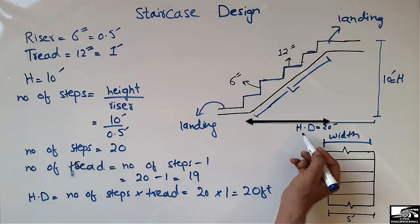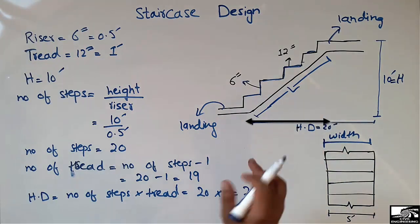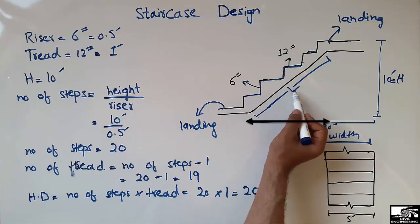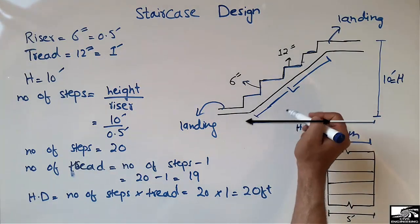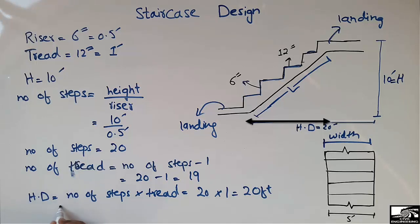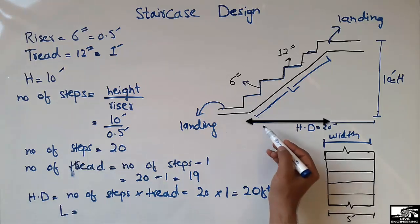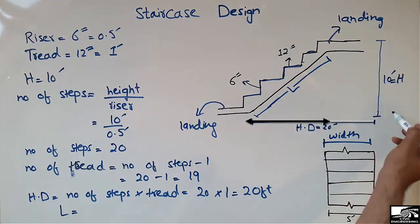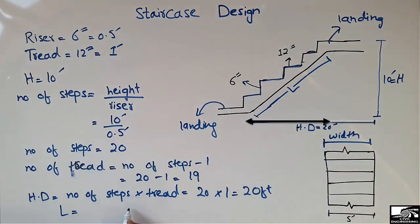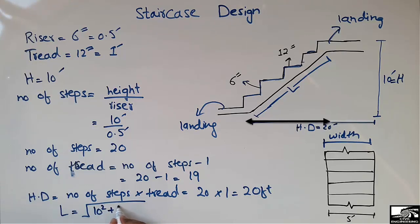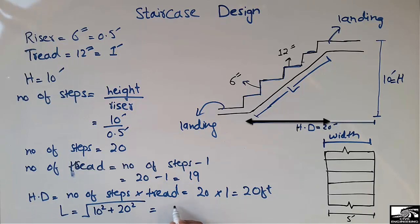Now the remaining unknown is the total length of the staircase. Since the horizontal distance and the vertical distance are both known, we can use the Pythagorean theorem: the square root of (10 squared plus 20 squared). Calculating this gives 22.36 feet.